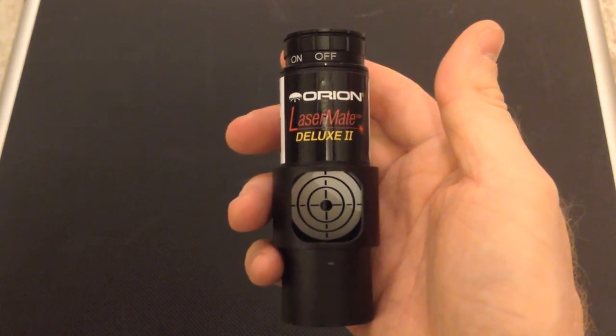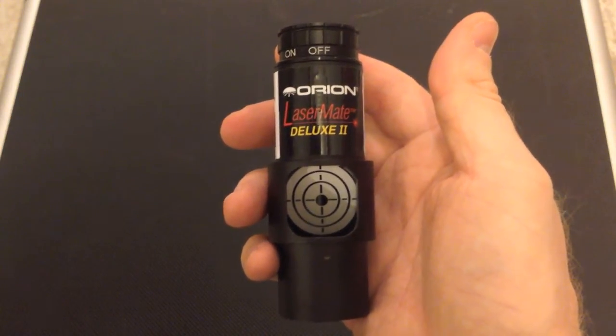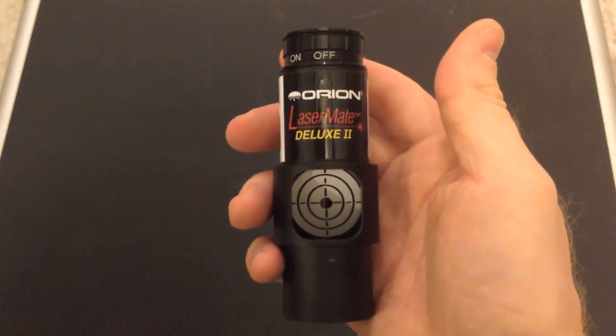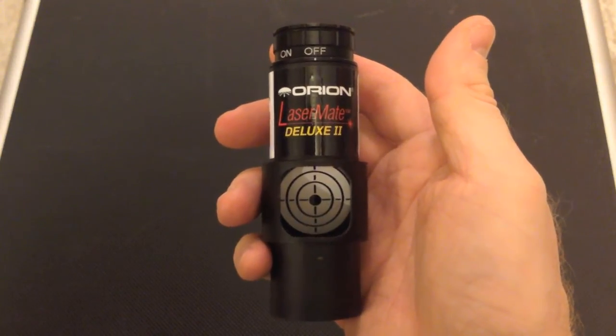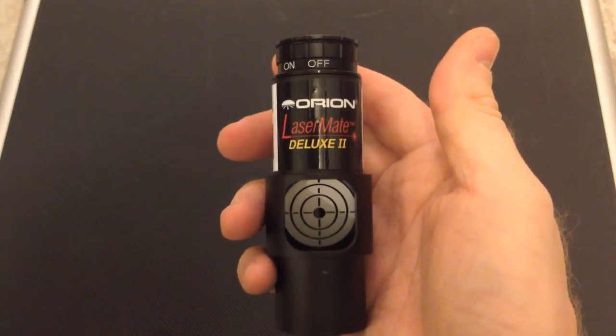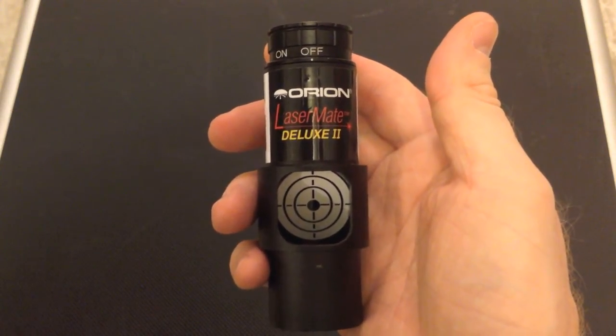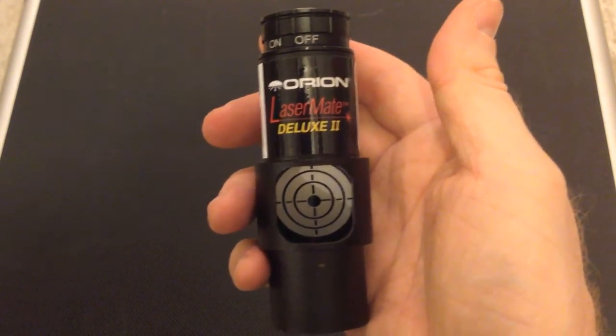I've used this collimator with my 4.5 inch Auto Tracker and the 4.5 inch StarBlast as well. Orion has quite a good video on this already. I encourage you to watch it. I'm just shooting my own version so you can see alternative views of the product and how it works. Any questions, you can leave them in the comments below.